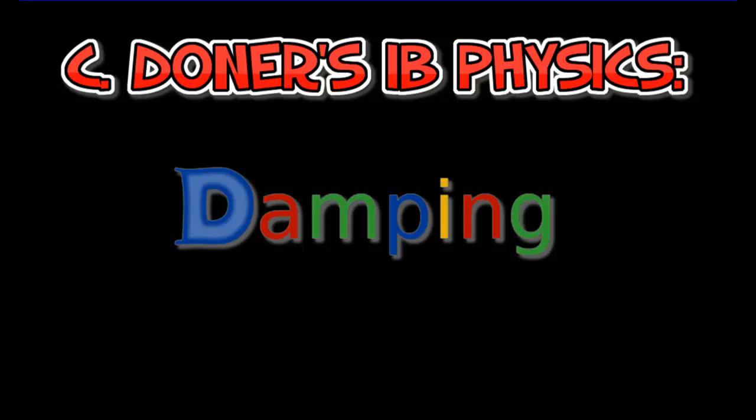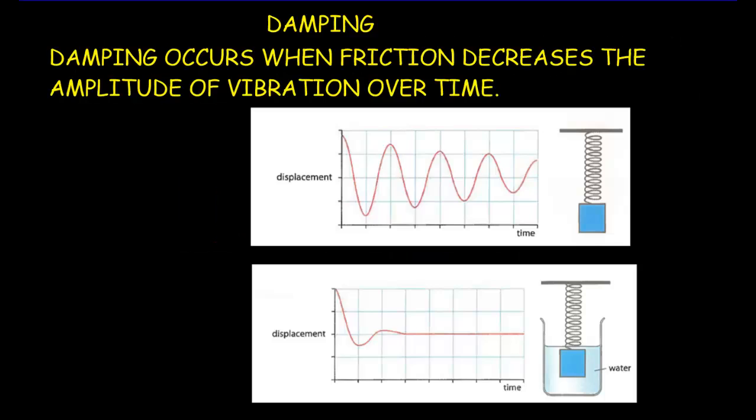This is a very short lesson on damping. We get damping whenever there's some friction in our system. So here we've got a vertical oscillator oscillating up and down, but now we've got some friction in the system, and that means our total energy is going to decrease.